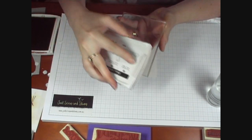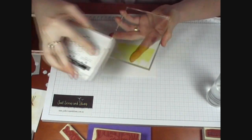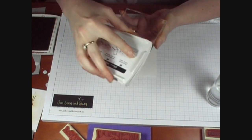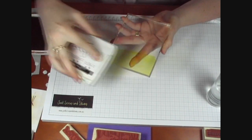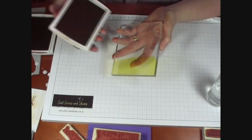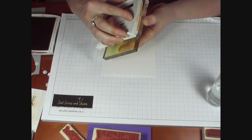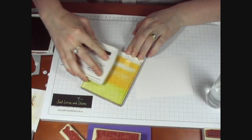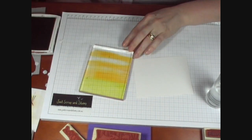All we're going to do is drag some color along our acrylic block, starting off with Kiwi Kiss, which is a green color. Then I'm going to use a mustard color and just drag it across the block so you've got a uniform line of color.